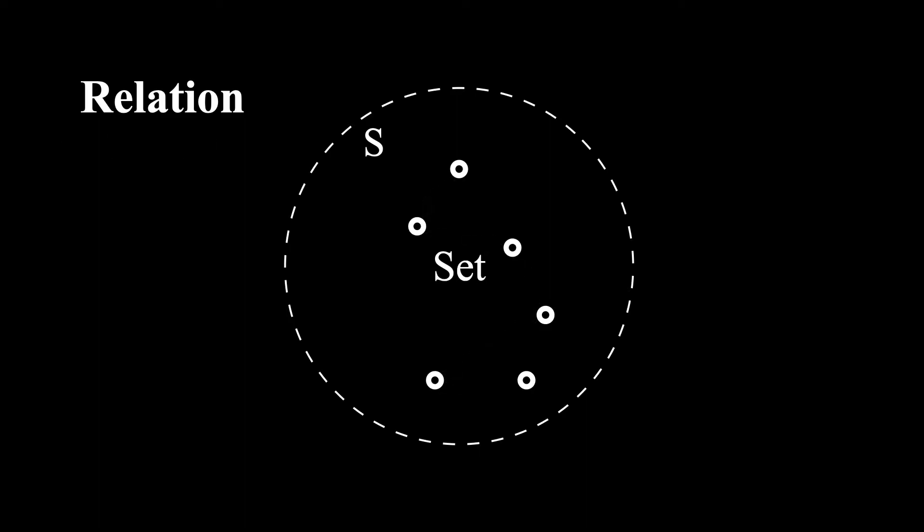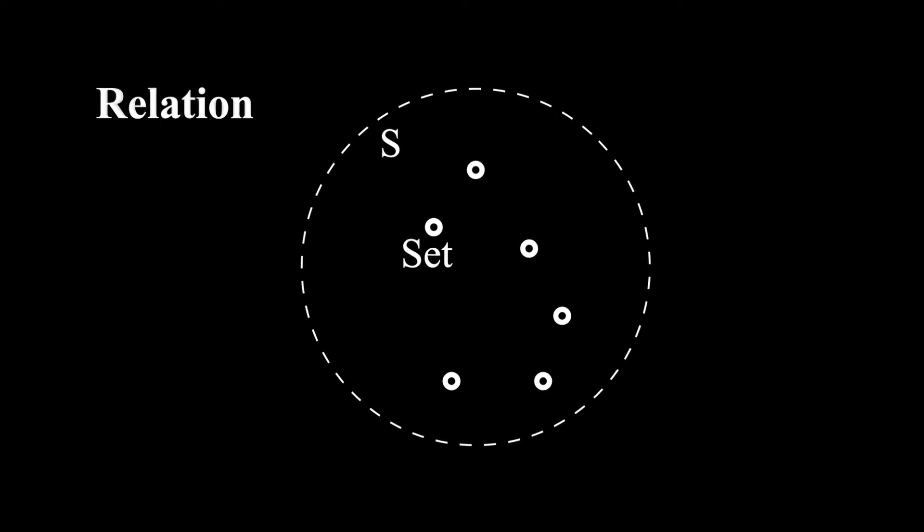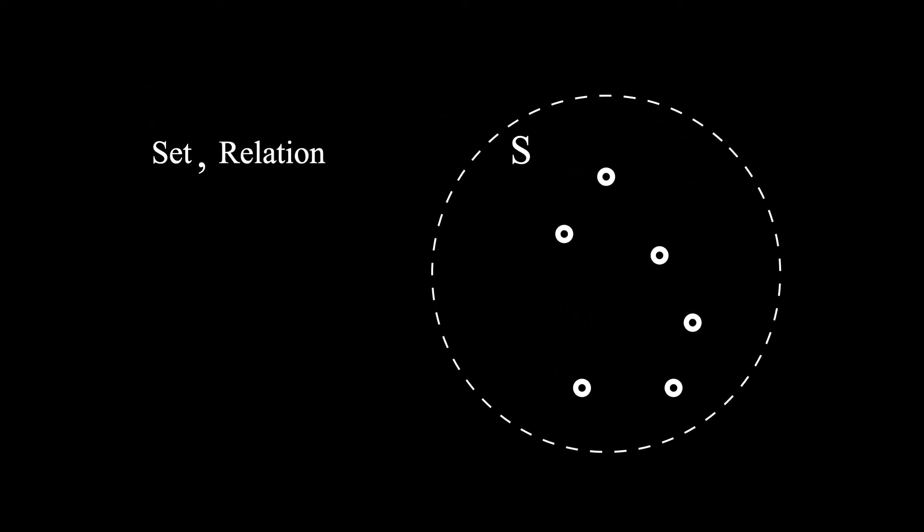There are many other relations one can define on the objects in any given set. Depending on which relation you choose, this gives rise to different mathematical structures, with one of them being those subspaces we're trying to understand.